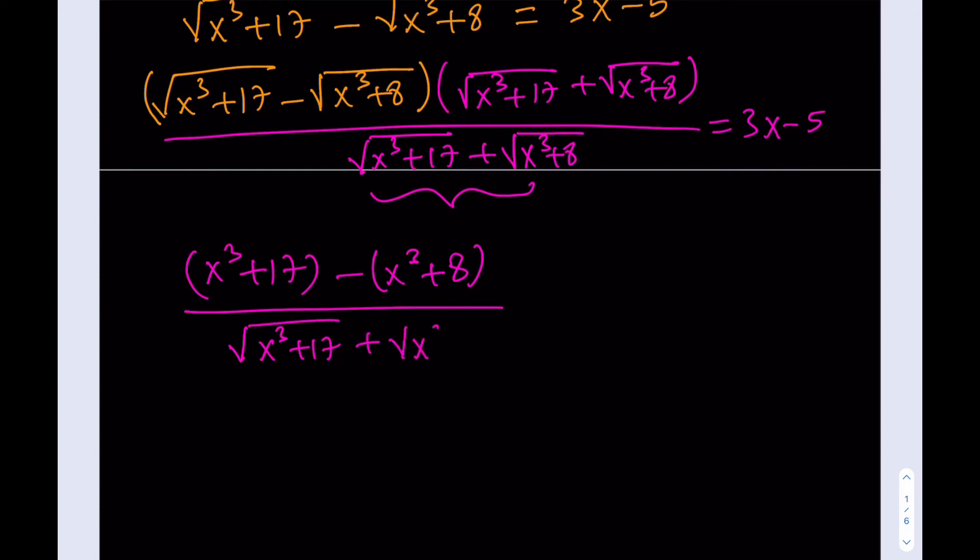And remember, my remark a minute ago, I said that the expression, the bottom expression, is not going to be zero. But we're going to improve on that one. So let's simplify this a little bit more. So the top actually simplifies nicely. This is why we are multiplying by the conjugate, because we get a constant. So that's going to be 9, divided by the square root of x cubed plus 17 plus the square root of x cubed plus 8. Awesome. So this is much nicer.